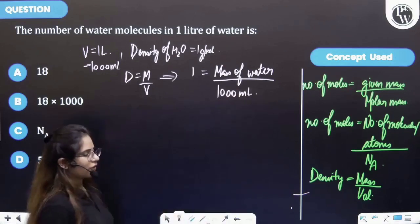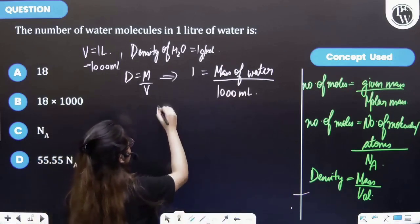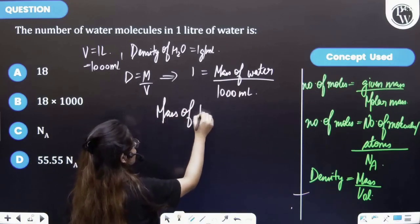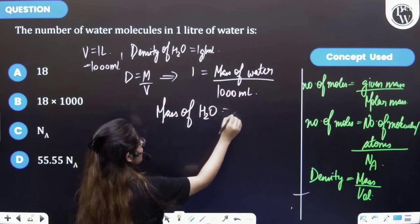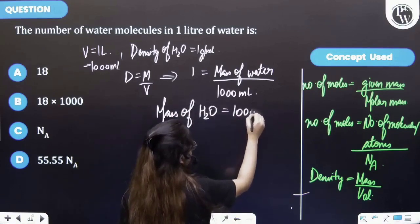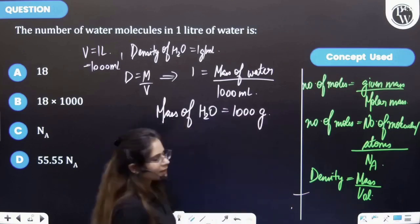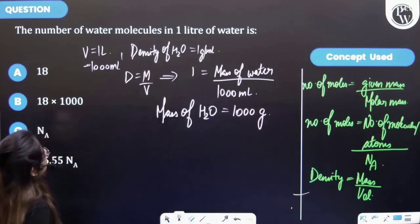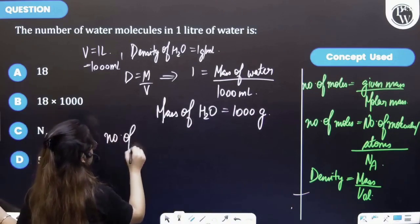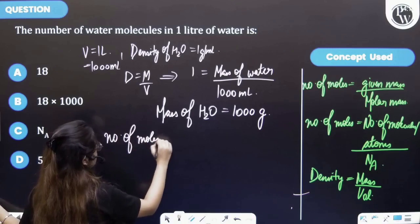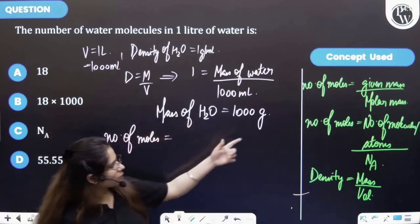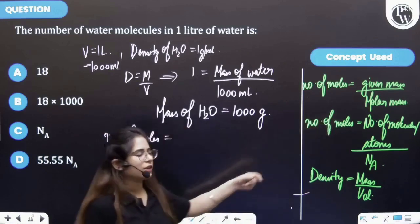And so the mass of water will be equal to 1000 g. Now let's find the number of moles by using the first formula, which is equal to given mass upon molar mass.